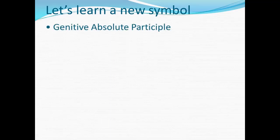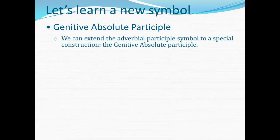So let's learn a new symbol for this video — just one: the genitive absolute participle. The genitive absolute is a construction that many students have difficulty with, so we're going to spend a fair amount of our time in this video making sure we understand what that construction is. Once we understand clearly what it is, how to diagram it will follow pretty naturally and pretty easily. We're extending here our discussion of the adverbial participle to this special construction called the genitive absolute.